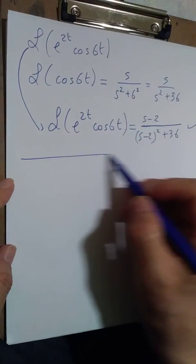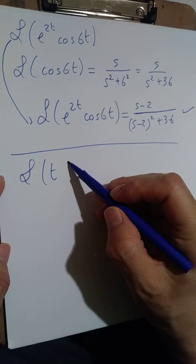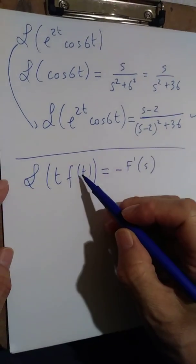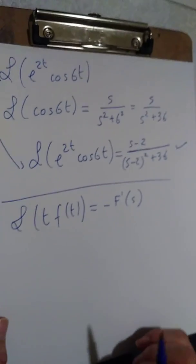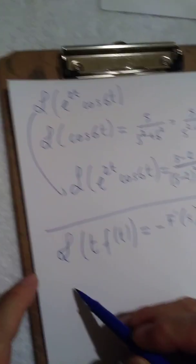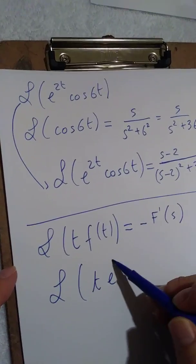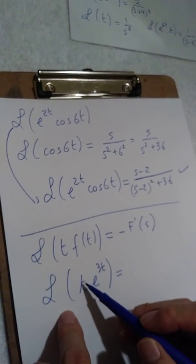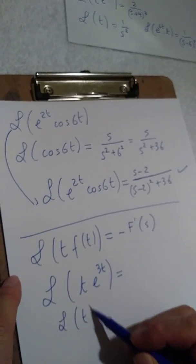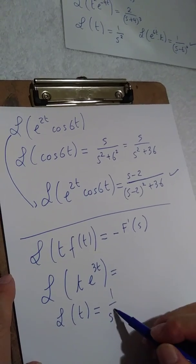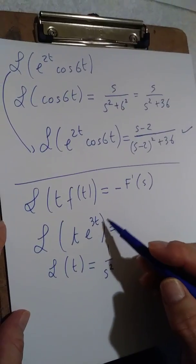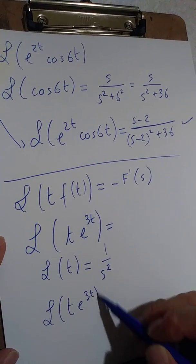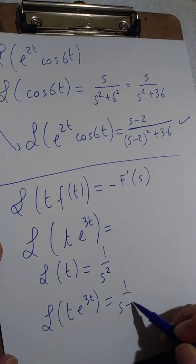Next, the transform of t·f(t) equals minus the derivative of the transform of f(t). For example, the transform of t·e^(3t): using the first shifting theorem, find the transform of t — which is 1 over s² — then shift s down by 3, giving 1 over (s minus 3)².